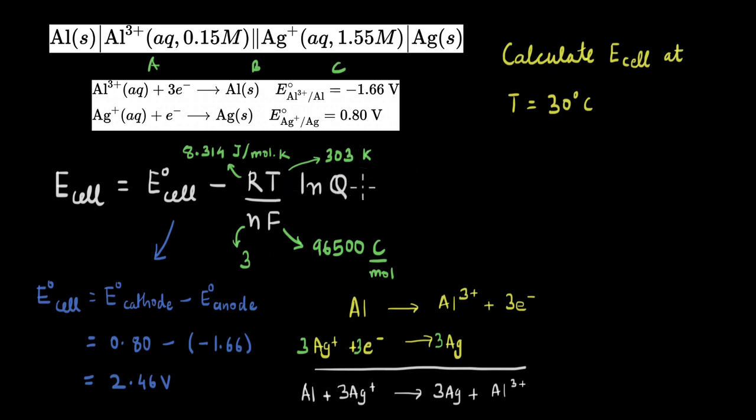This Q is the reaction quotient, and we're going to get this from our cell reaction. To get this Q, we're going to use our cell reaction, and for this reaction, we can write the reaction quotient like this, which is the concentration of the Al3 plus ion, which is on the product side, divided by the concentration of this Ag plus ion, raised to the power 3, which is the coefficient here.